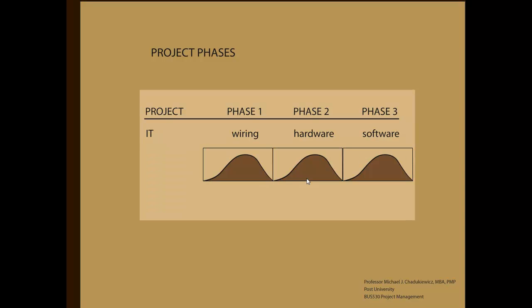Project phases can be implemented sequentially. In the case of the IT project, each phase is completed before the next phase starts because the project was spread out over the course of three years. Notice each phase of the project goes through a complete life cycle.